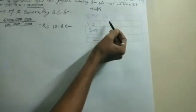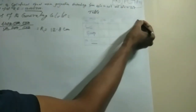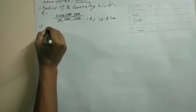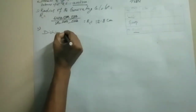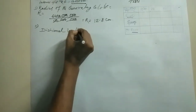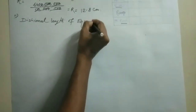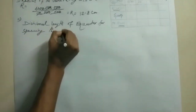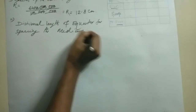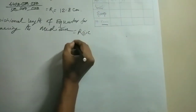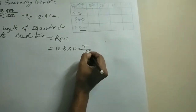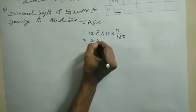With a 10 degree interval — 10, 20, 30, 40 degrees. Step 1: the divisional length of the equator for spacing the meridians. This is RIC: R equals 8 cm, interval 10, multiplied by pi divided by 180. So RIC equals 2.23 cm.